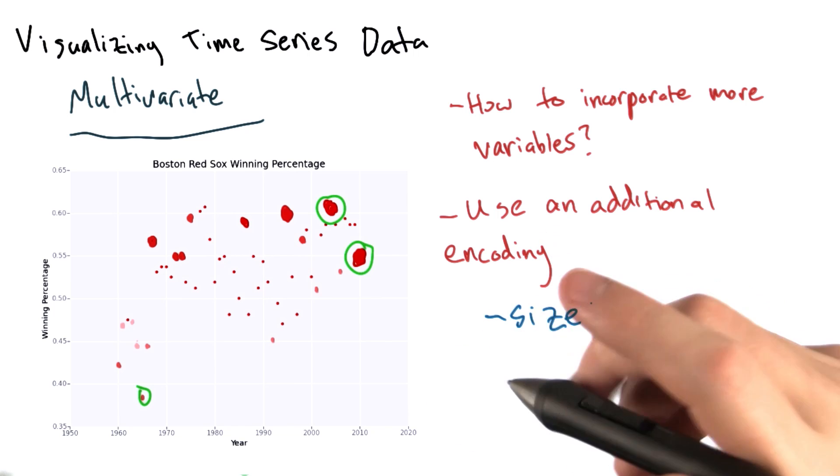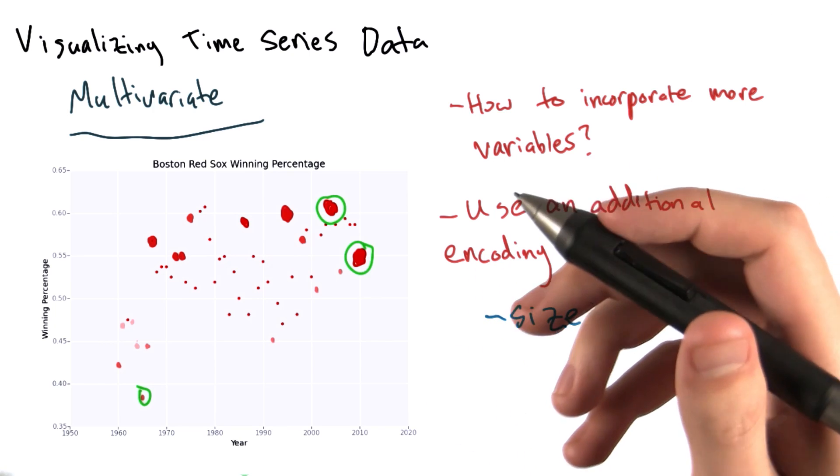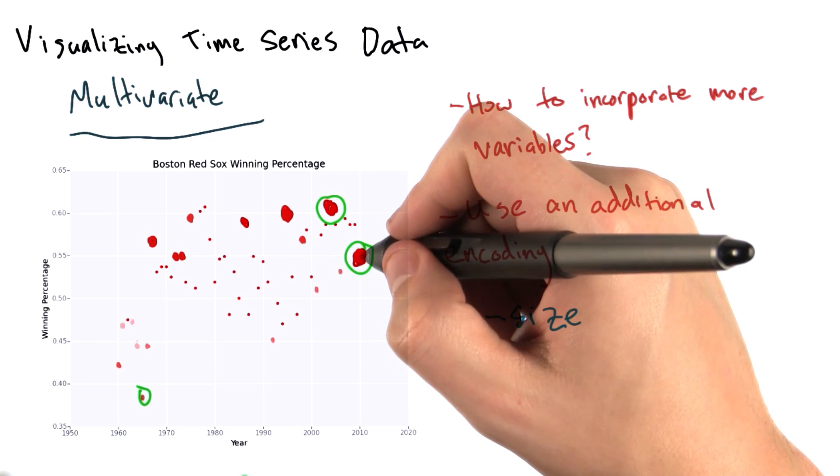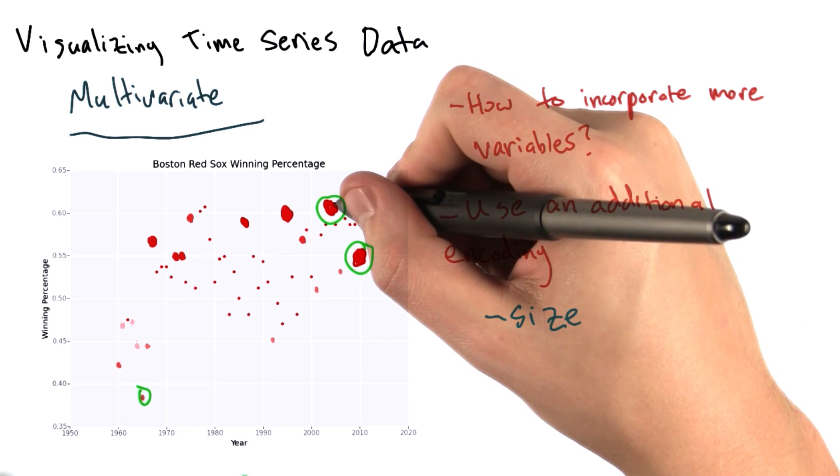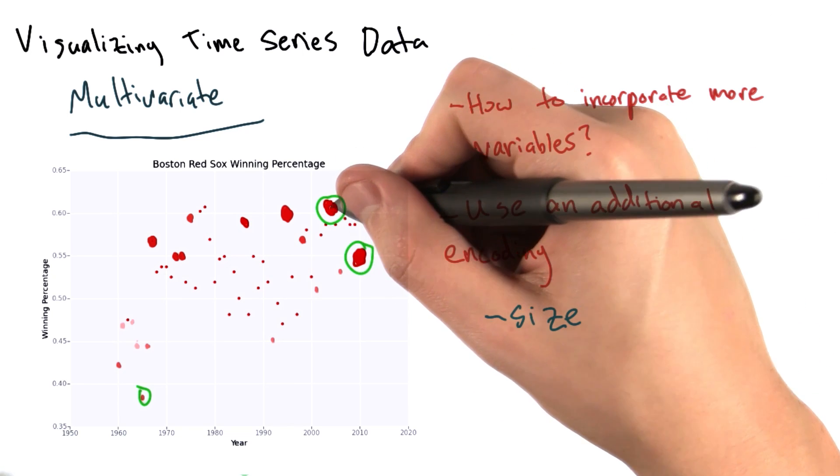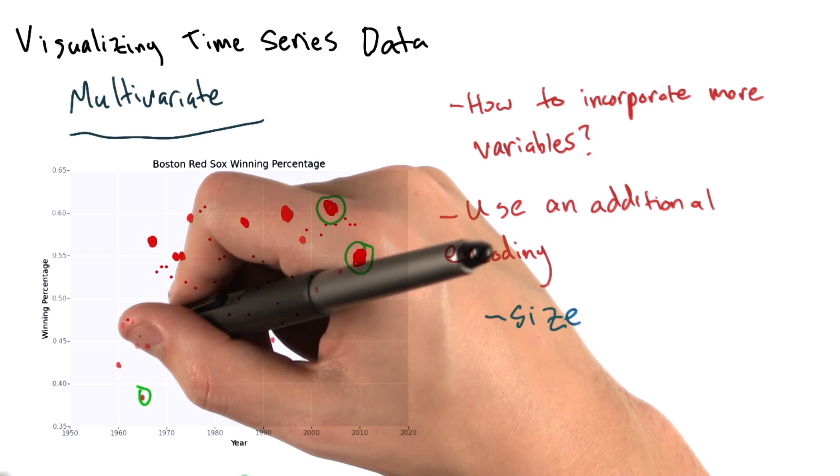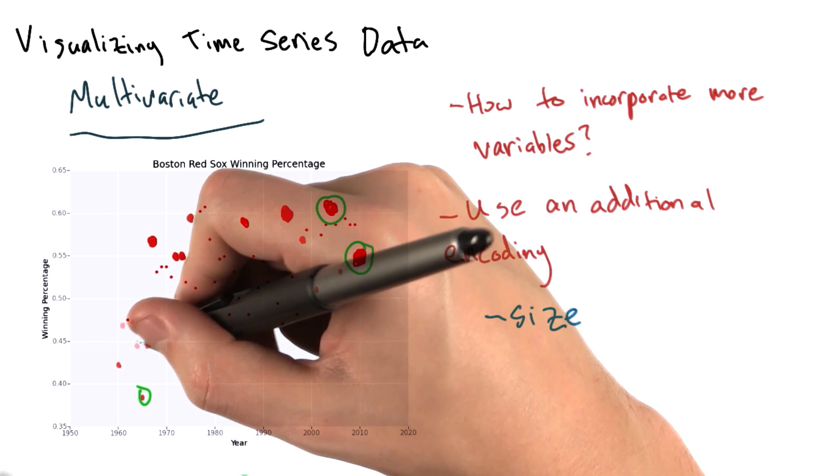We could even double up on visual cues. For example, maybe we also use the saturation of the red color to indicate how many home runs were hit. So our larger dots will be a more intense shade of red, whereas our smaller dots will be a less intense, maybe almost pink shade of red.